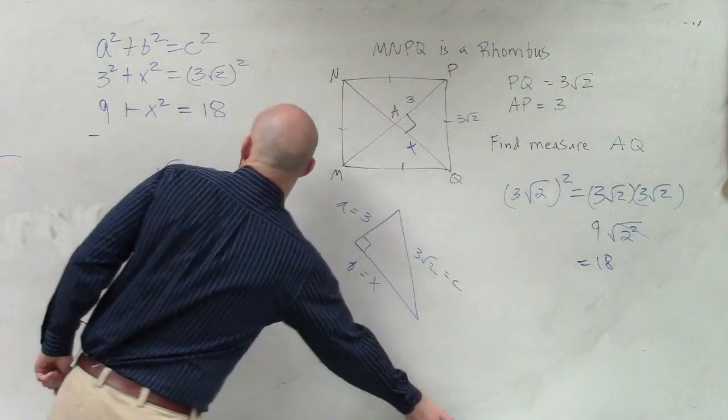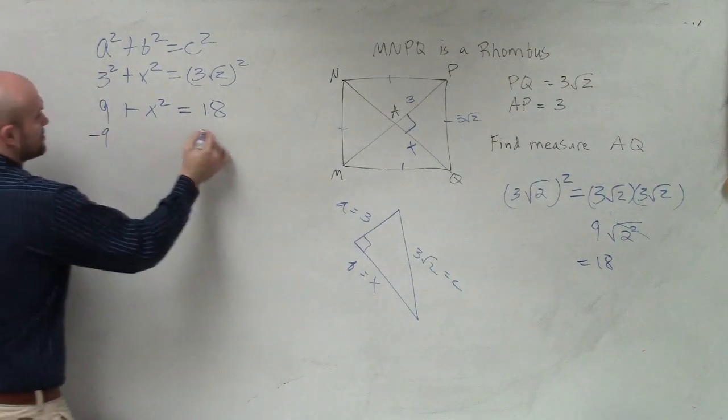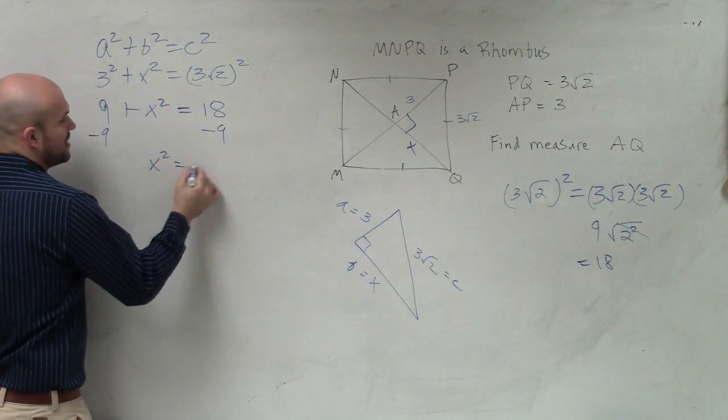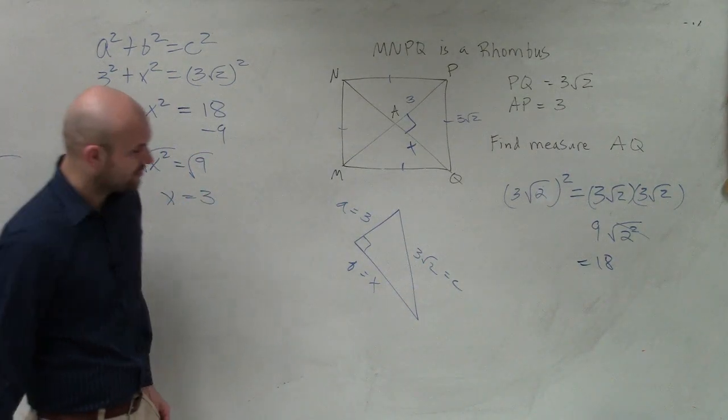So now I can go ahead and solve. I subtract 9, subtract 9. I get x squared equals 9. Take the square root. Take the square root. x is going to equal a positive 3.